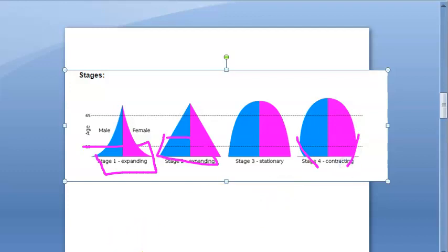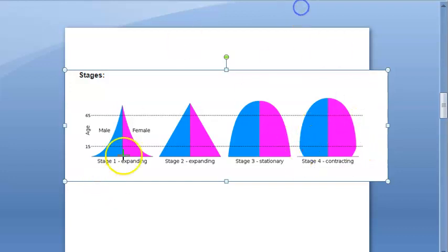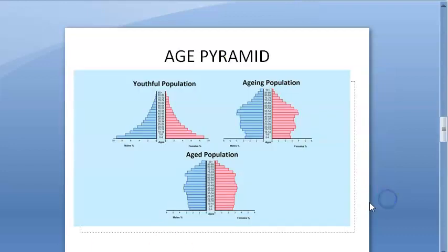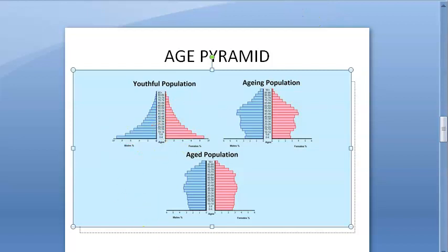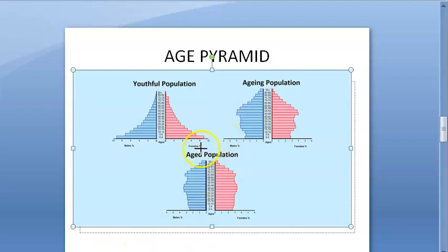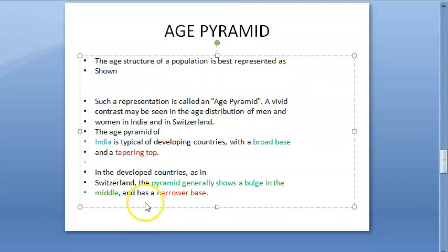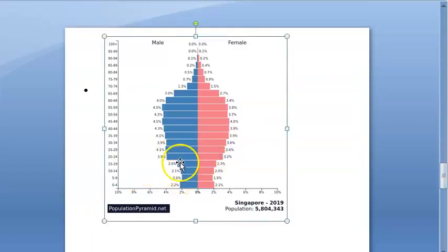The three stages: expanding stage has a broad base — India is here — indicating a youthful population. Stationary stage is in the middle. Contracting stage has a narrow base. A bulge in the middle indicates an aging population where people will soon become old, and a top-heavy shape indicates an aged population.